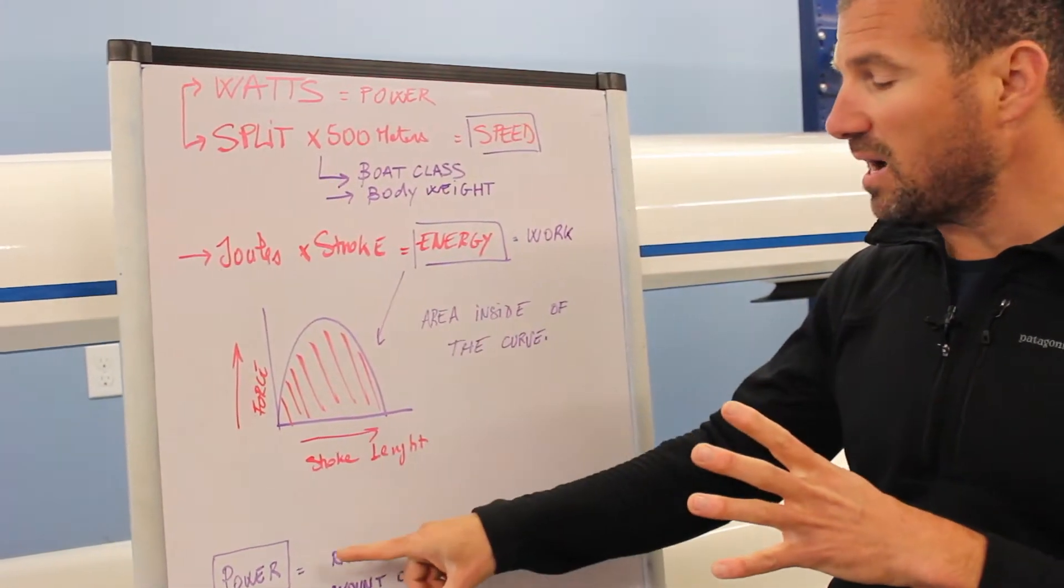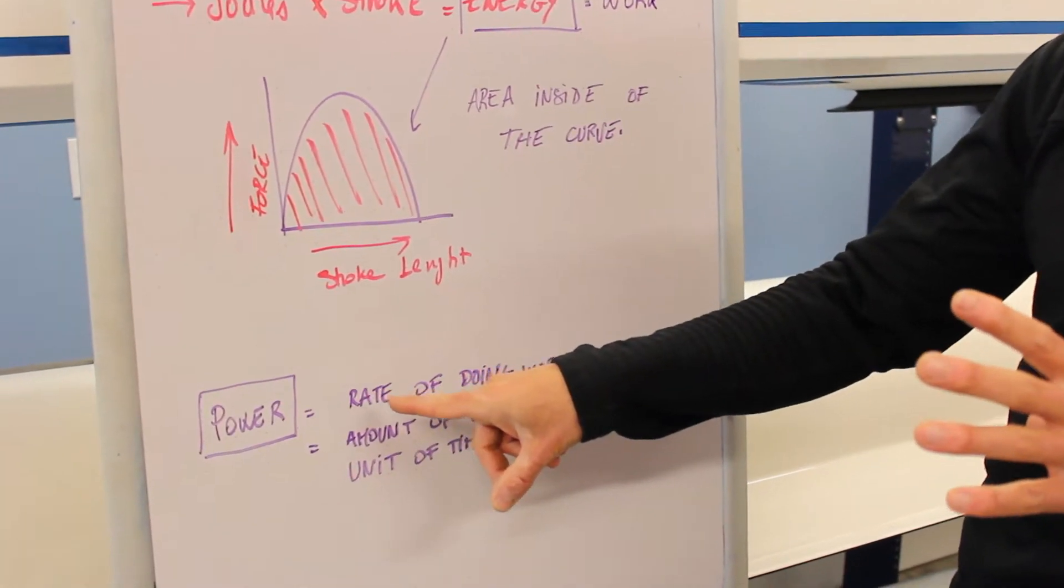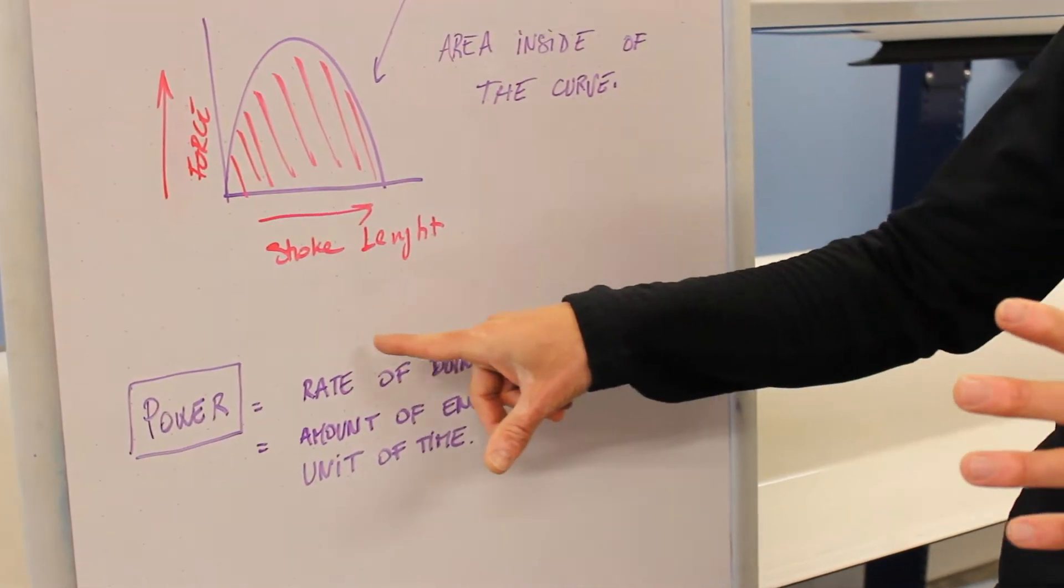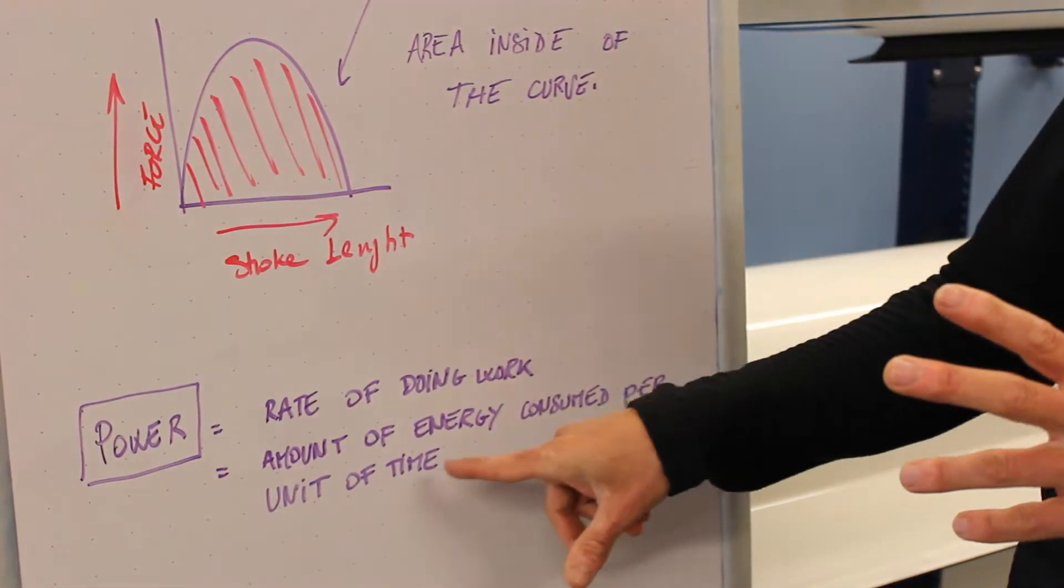So power, really simple, is rate of doing work. So there is time in here - it's the amount of energy consumed per unit of time.